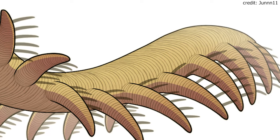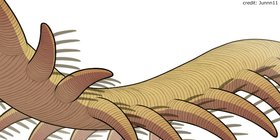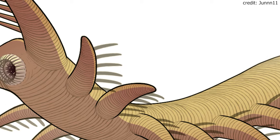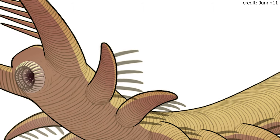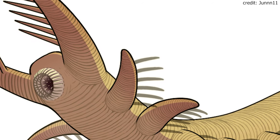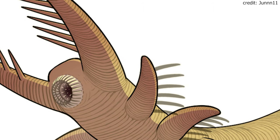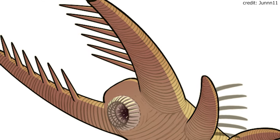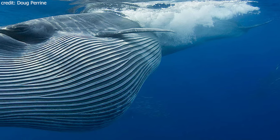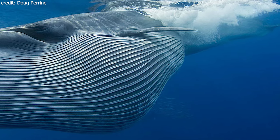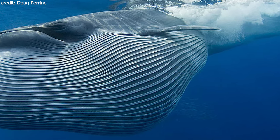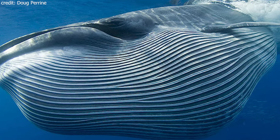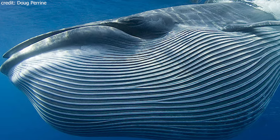One theory is that Omnidens caught small animals with this hunting net and thus led a predatory existence. However, the exact function of the mouth parts has not been clarified. It is therefore also possible that Omnidens used this net to filter plankton and other microorganisms from the water. Such animals are known as filter feeders, the best example today being baleen whales.